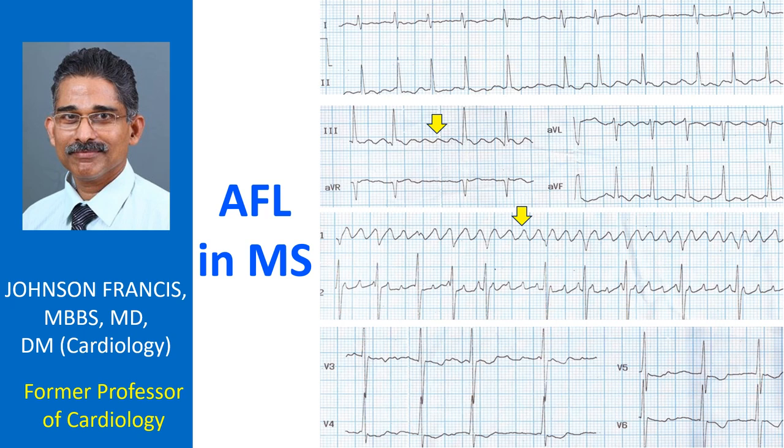In some cases of mitral stenosis, the coarse fibrillary waves resemble flutter waves in some leads but not in others. Such impure rhythms are sometimes called flutter-fibrillation, flitter, or flutter. In those cases, the waves are irregular. In this ECG, the waves are regular, suggesting true atrial flutter.